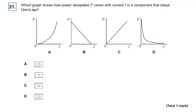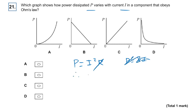Question twenty-one: which graph shows how power dissipated varies with current? We know P equals I squared R. With constant resistance, P is proportional to I squared, so the graph should look like a y equals x squared curve. The answer is A.